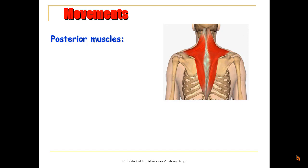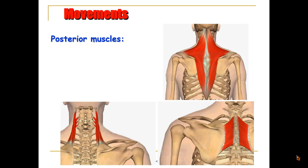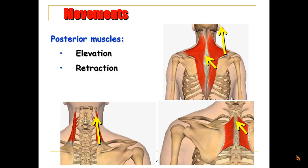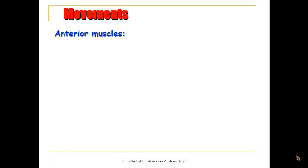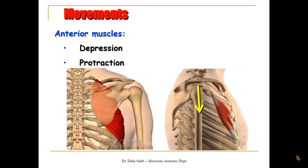For the movements of the pectoral girdle, we have muscles on the posterior aspect like the trapezius, rhomboids minor and major, and the levator scapulae. Elevation of the shoulders is performed by the upper fibers of the trapezius and the levator scapulae. Retraction of the scapulae is performed by the middle fibers of the trapezius and the rhomboids. Depression is performed by anteriorly placed muscles like the subclavius and pectoralis minor. Protraction of the scapulae is performed by the pectoralis minor and the serratus anterior muscle.